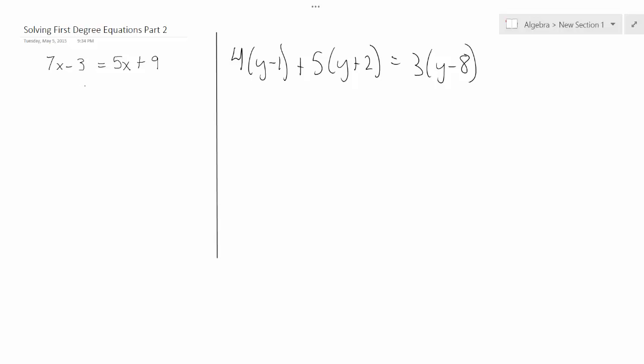So for this equation, 7x minus 3 equals 5x plus 9, we're going to subtract 5x from both sides. Then we're going to end up with 2x minus 3 equals 9.